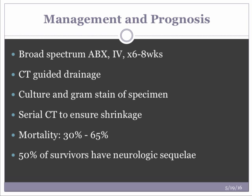Treatment for brain abscesses: broad-spectrum IV antibiotics are given for six to eight weeks as soon as the diagnosis is made. The immediate threat is mass effect, so we surgically drain the pus, which often decreases ICP. Everything aspirated is sent for culture and gram stain. Serial CTs are done to confirm the abscess is shrinking. If it continues to expand despite antibiotics, neurosurgery is called to intervene. Rupture into the ventricle or herniation is typically fatal. Mortality is 30–65%; lower rates are seen with combined antibiotic and surgical therapy. About 50% of survivors still have neurologic sequelae such as seizures and focal neurologic deficits.